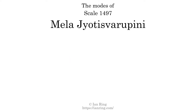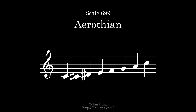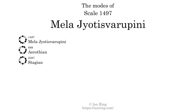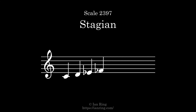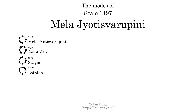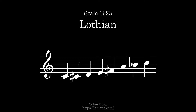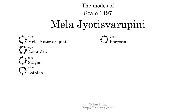This scale has 7 modes. The first mode is itself. The second mode is scale 699, also known as Rothian. The third mode is scale 2397, also known as Stajan. The fourth mode is scale 2859, also known as Rothian. The fifth mode is also scale 2859, also known as Rothian.